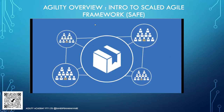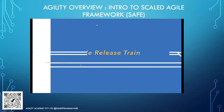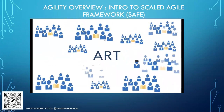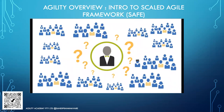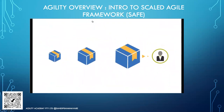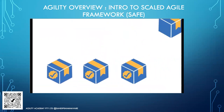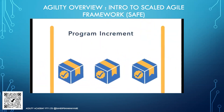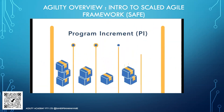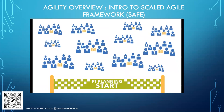At the end of each iteration, the team demonstrates completed work in an iteration review, then reflects on improvements in a retrospective. The Scrum Master coaches the team and facilitates events. In an enterprise, multiple agile teams work together as a team of agile teams called an Agile Release Train (ART), comprising 50 to 125 people. ARTs are cross-functional, including all people needed to explore customer needs, build, and deliver solutions. The ART works within a timebox called a Program Increment (PI), typically five iterations long.